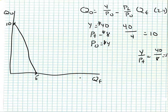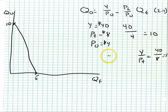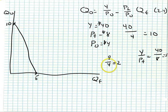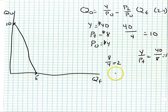The slope of this line is negative P_f over P_o, or negative 8 over 4, which equals 2. This means food is twice as expensive as other goods — you would have to give up two units of food in order to get one unit of other goods, or you can purchase twice as much food for every unit of other goods.